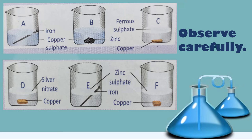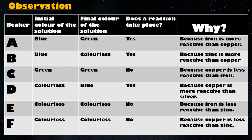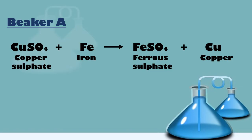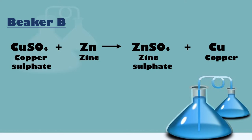Observe them carefully for some time. You will observe that reaction occurred only in beakers A, B, and D. This is because in all these beakers a more reactive metal displaced a less reactive metal from its salt solution. The chemical equation for the reaction taking place in each beaker is as shown.